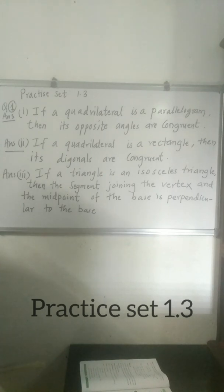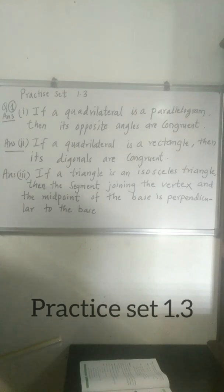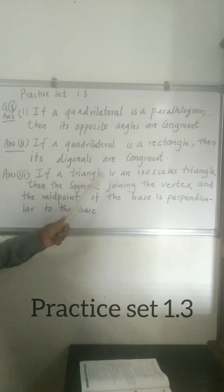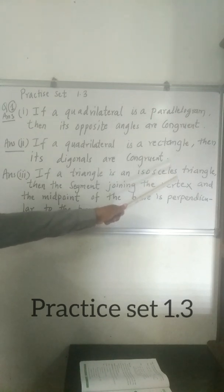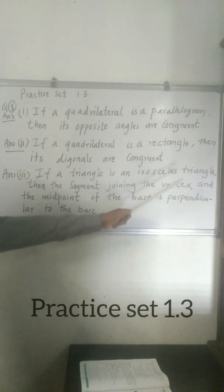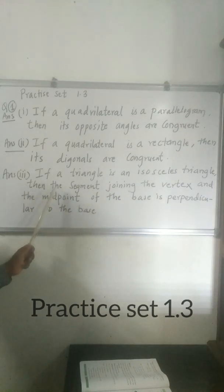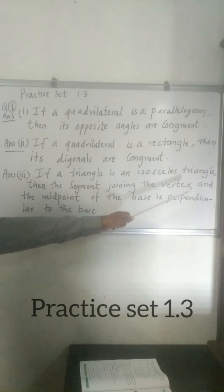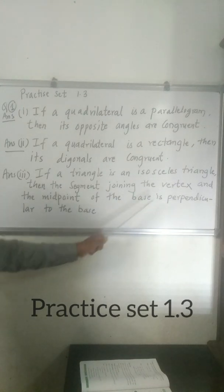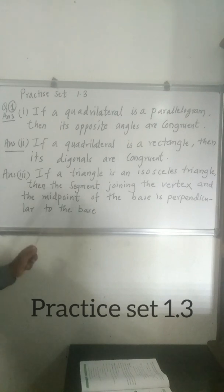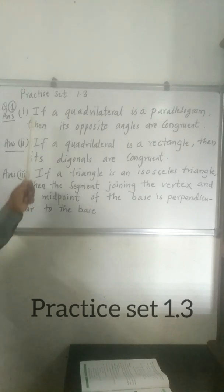Third statement: 'In an isosceles triangle, the segment joining the vertex and the midpoint of the base is perpendicular to the base.' In if-then form: If the triangle is isosceles, then the segment joining the vertex and the midpoint of the base is perpendicular to the base. The second part after 'then' is the consequent.